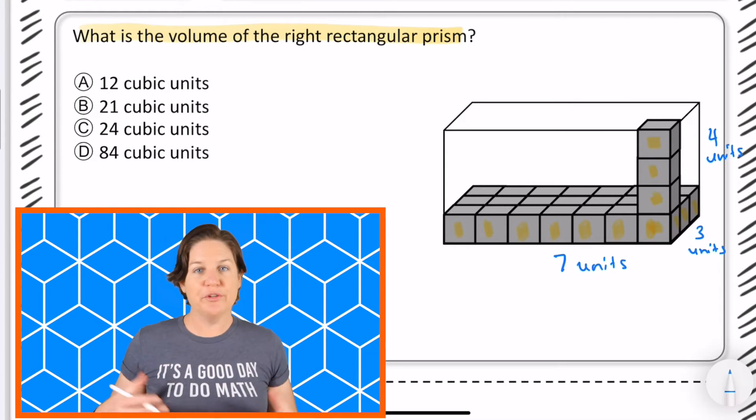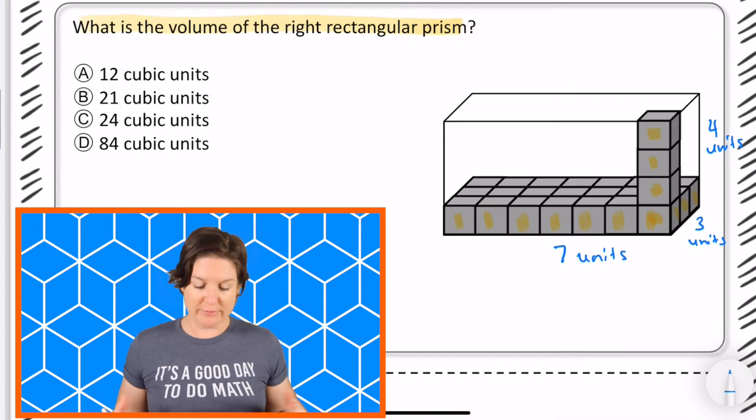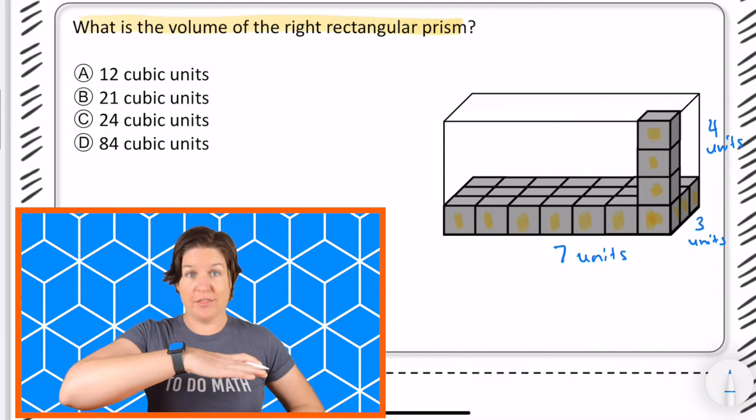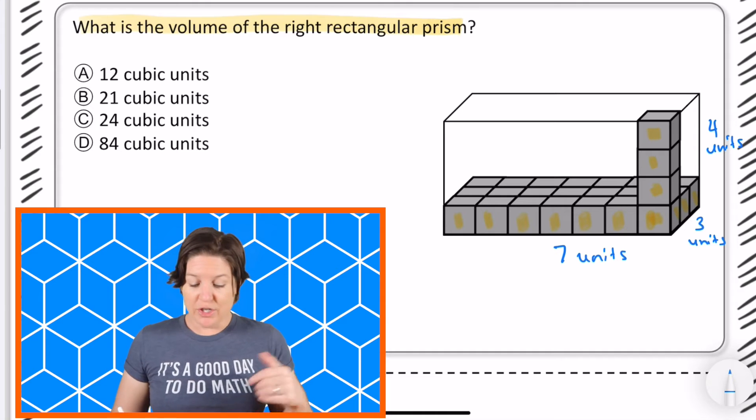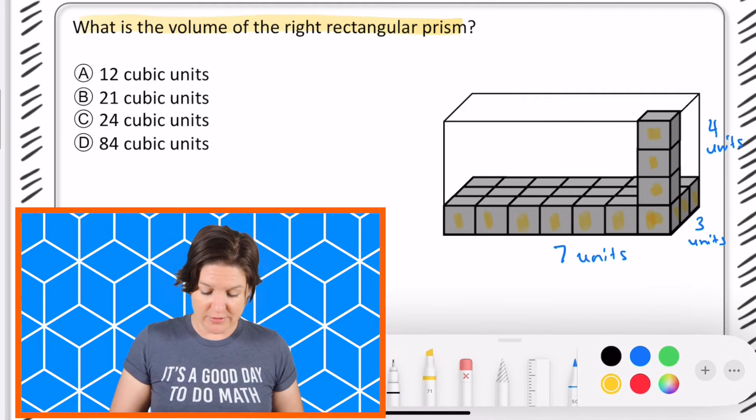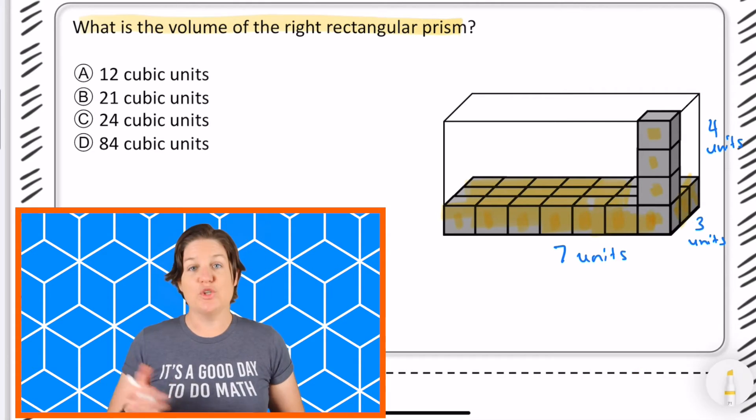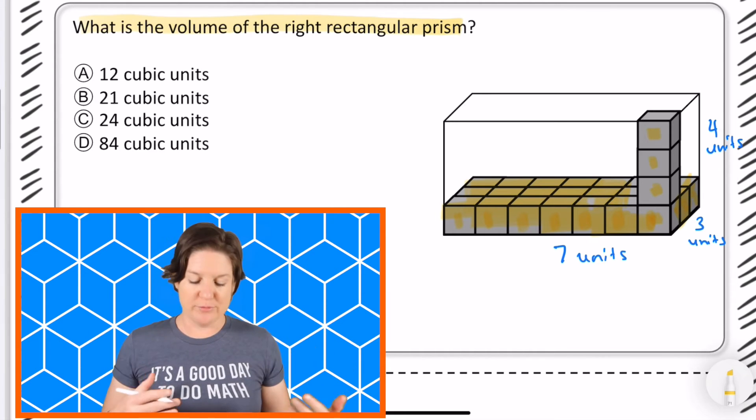So there's a couple different ways that you could have gone about solving this problem and finding the volume of the entire right rectangular prism. One way might be to multiply the length times the width times the height. You could also multiply the length times the width to find the base which is just this part down here, and then you could multiply that by the levels which is really the same thing, length times width times height.